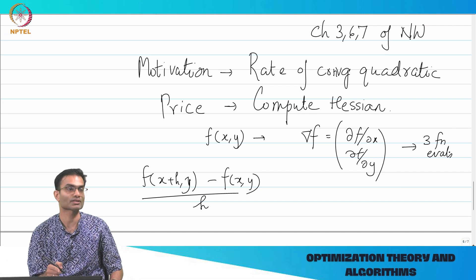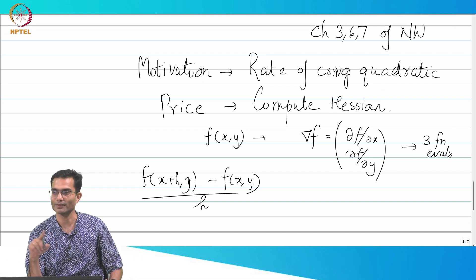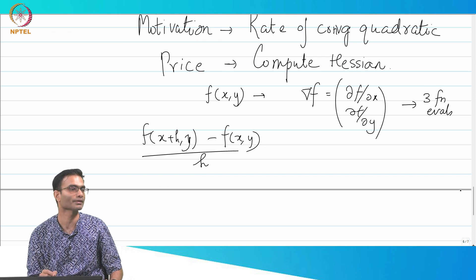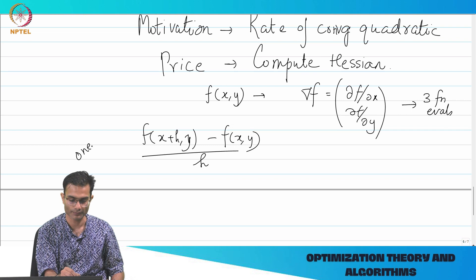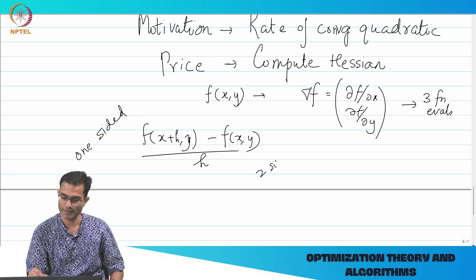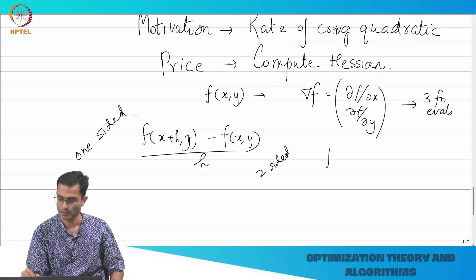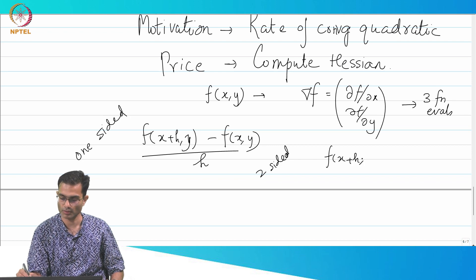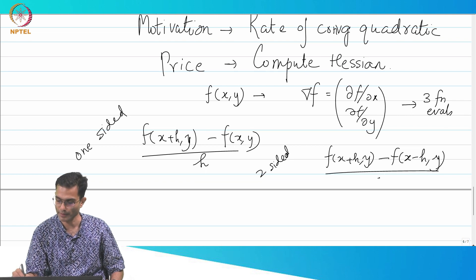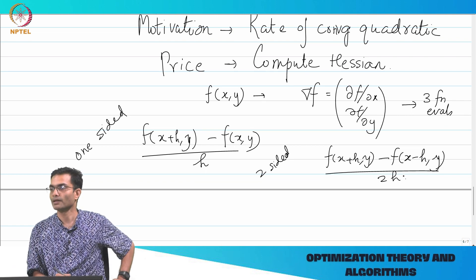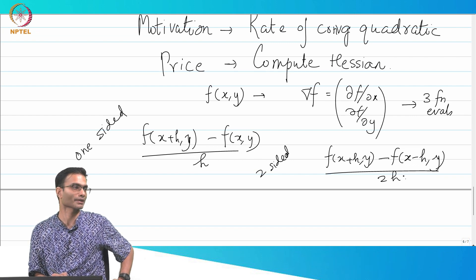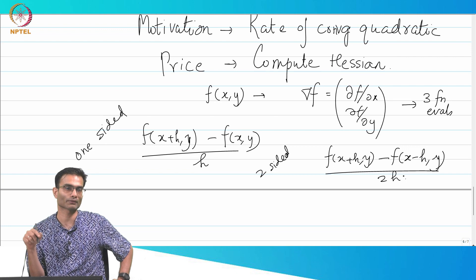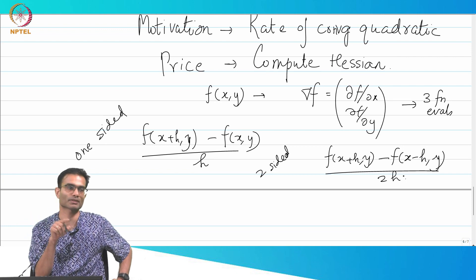This is called a one-sided difference. There is also a two-sided or central difference. The two-sided difference is: f(x+h, y) minus f(x−h, y), divided by 2h. Here we need four function evaluations to get the gradient, because there is no common point — it's x+h, x−h, y+h, y−h.